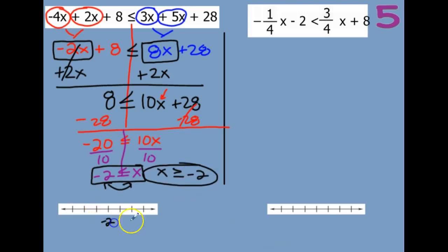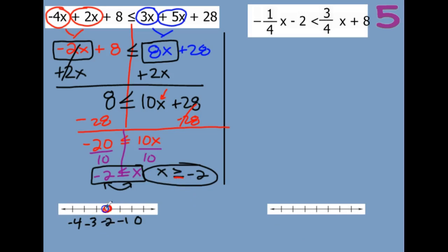So I have a negative 2. 0 would be over here, so negative 1 would actually be right there, and then negative 3 going this way. If you want to put more numbers on there, you can. This would be a closed circle because of the equal to. And then greater than — this is not making an L — so greater than is to the right, towards the positive numbers.